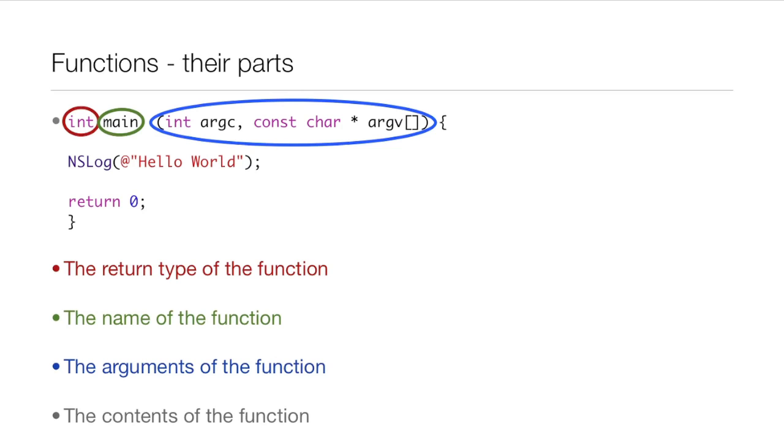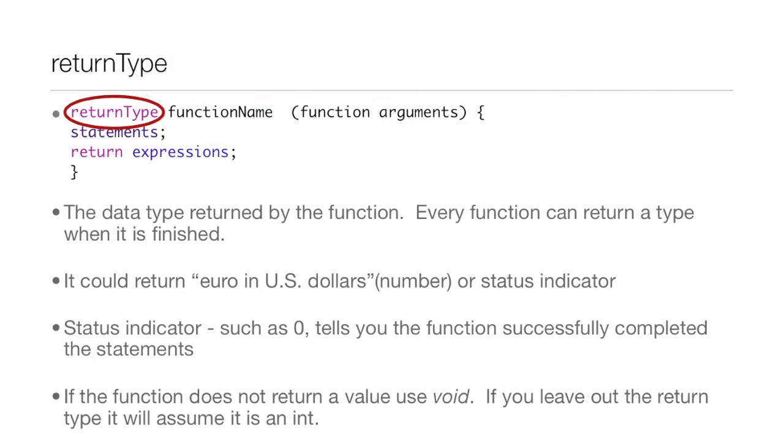So the return type is the data type returned by the function. Every function can return a type when it's finished. You could return something like a euro converted into US dollars—that would be like a number—or you can return a status indicator.